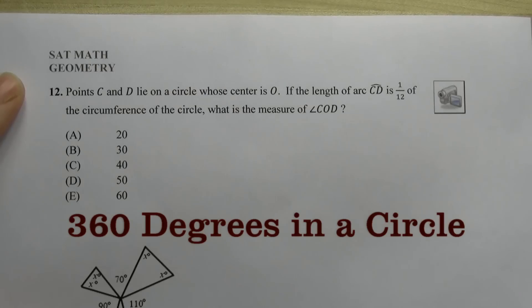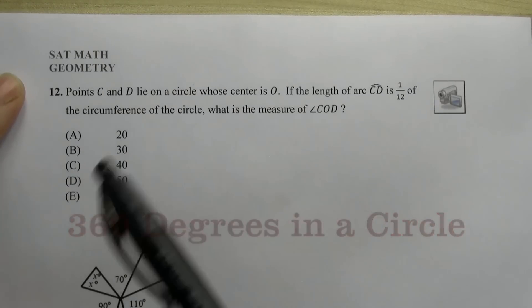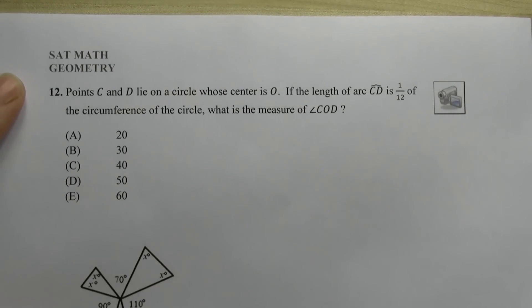It says the points C and D lie in a circle whose center is O. If the length of arc CD is one twelfth of the circumference of the circle, what is the measure of angle COD?